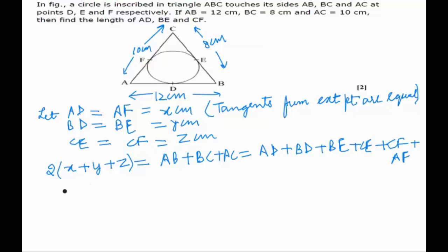Thus we get that x plus y plus z is equal to 30 by 2, which is 15 centimeters. Also, we know that AB, which is equal to AD plus BD, can be written as x plus y. Let's say this is equation 1. Let's say equation 2.